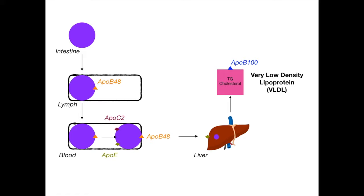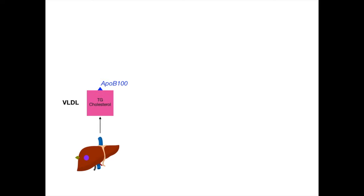The VLDL has a unique apolipoprotein on its shell, and that apolipoprotein is APO-B100. I'll give you a mnemonic for its high-yield function after showing the full biochemical pathway. So VLDL comes out with triglycerides and cholesterol inside it, and APO-B100 on its shell.